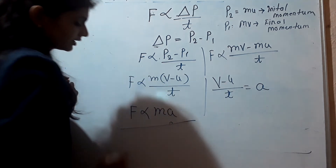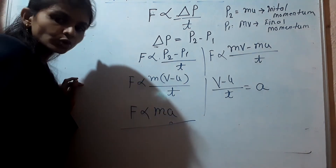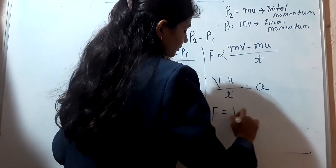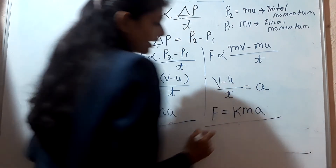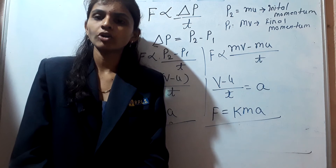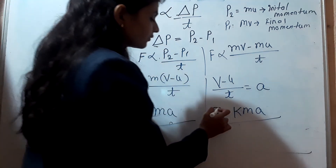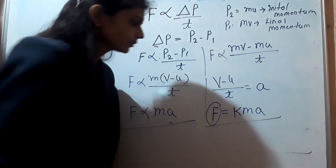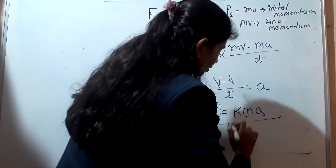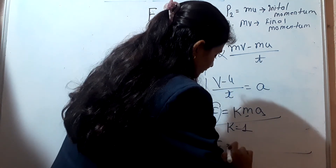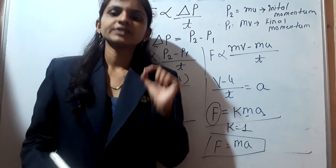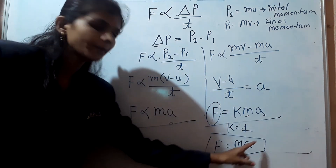So F is directly proportional to mass times acceleration. To remove the proportionality sign, F is equal to k times m times a. If we apply one newton of force, with mass one gram and acceleration one meter per second squared, we get k equal to one. Therefore F is equal to ma.